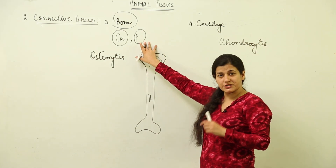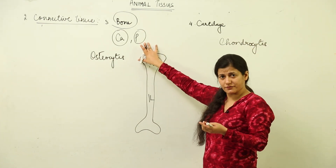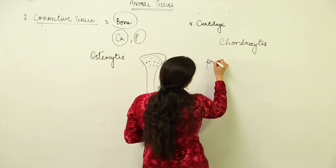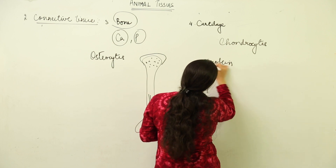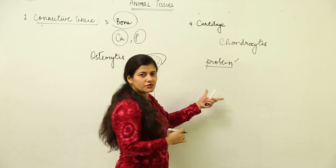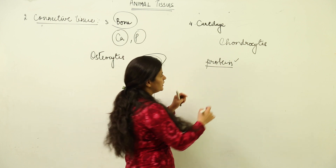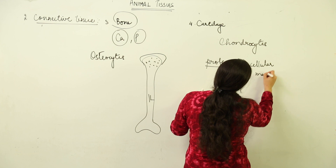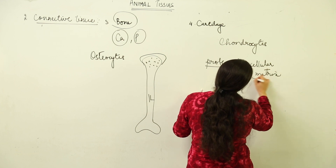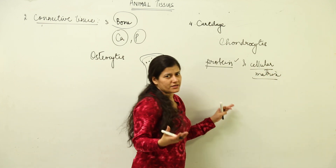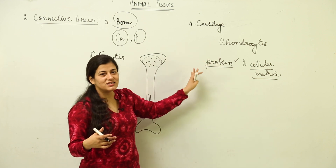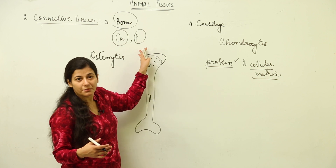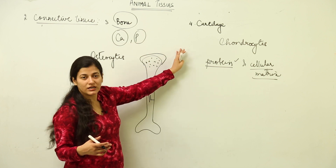While bone has a hard calcium and phosphorus matrix, cartilage has a protein matrix and somewhat fibrous matrix. You will not find mast cells here; fibroblasts could be present, but you will find chondrocytes. This intercellular matrix is softer compared to that of bone — that is the key difference between cartilage and bone.